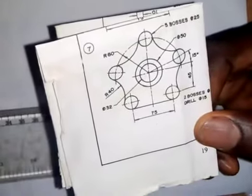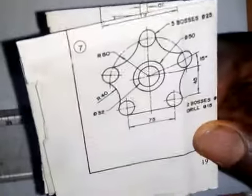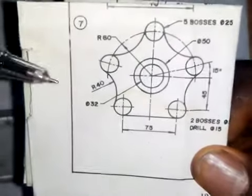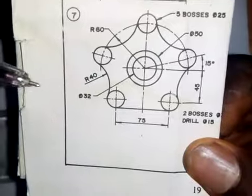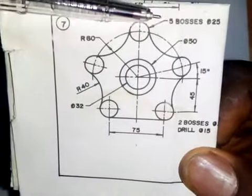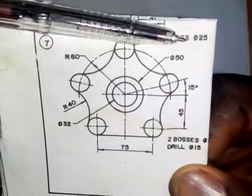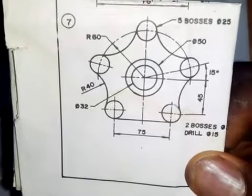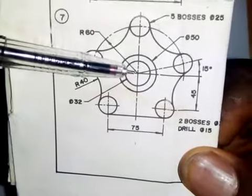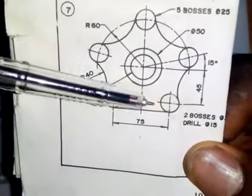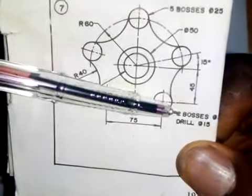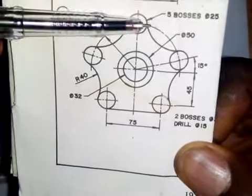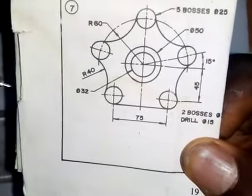Now this problem on the screen is a question I want to solve and it has to do with the use of the principles of tangency. Before I begin to solve it let me explain some things about the dimensions as you can see on the screen. We have five circles with diameter 25 millimeters each, and the distance between the center line of these circles is 45 millimeters. The radius of this arc is 40 millimeters — the same applies to this one, this one, and this one, so 40 millimeters for each of them.